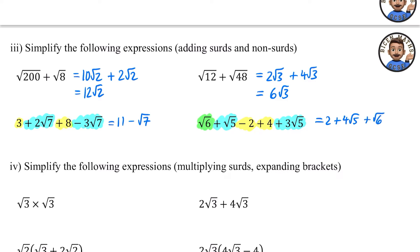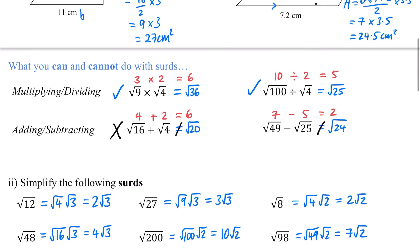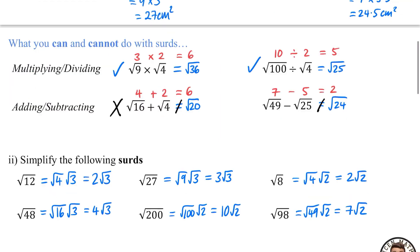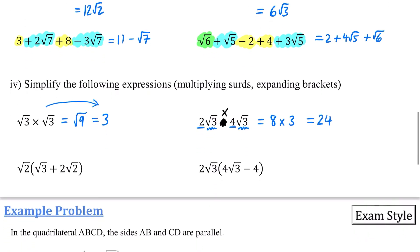Now for multiplying surds and expanding brackets. √3 × √3 = √9 = 3 — so a surd multiplied by itself gives the number inside. For 2√3 × 4√3: multiply the integer parts (2 × 4 = 8) and the surd parts (√3 × √3 = 3), giving 8 × 3 = 24.